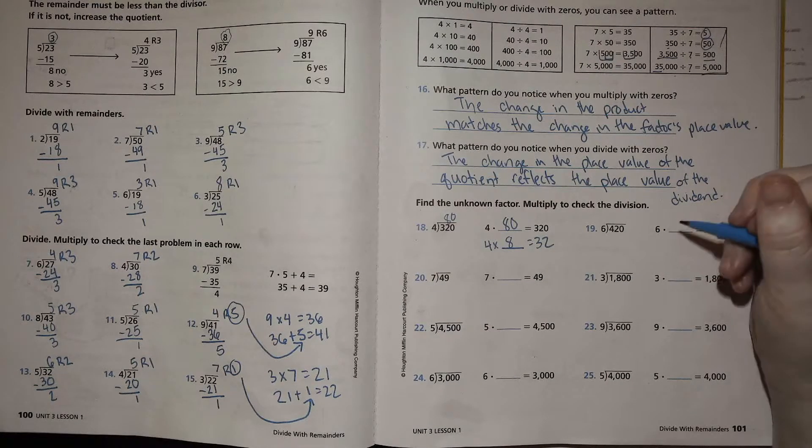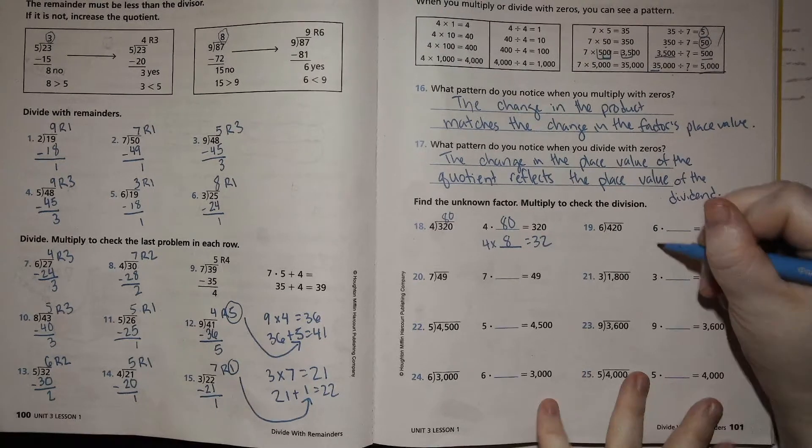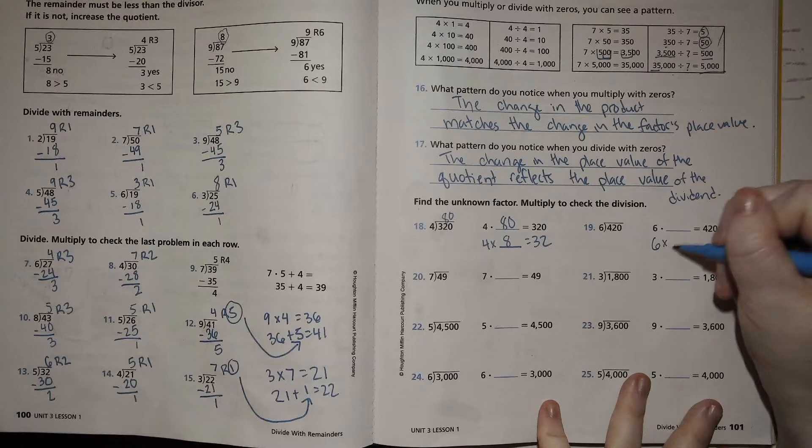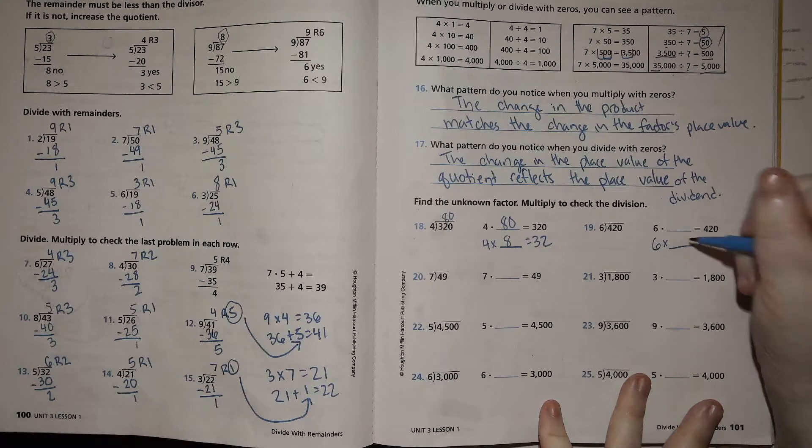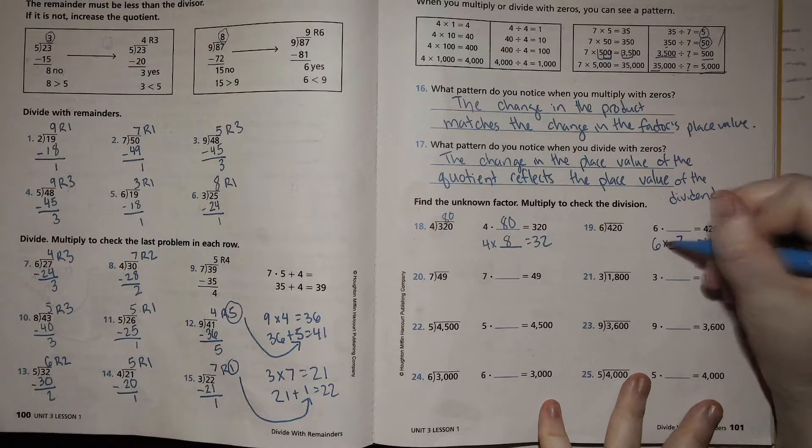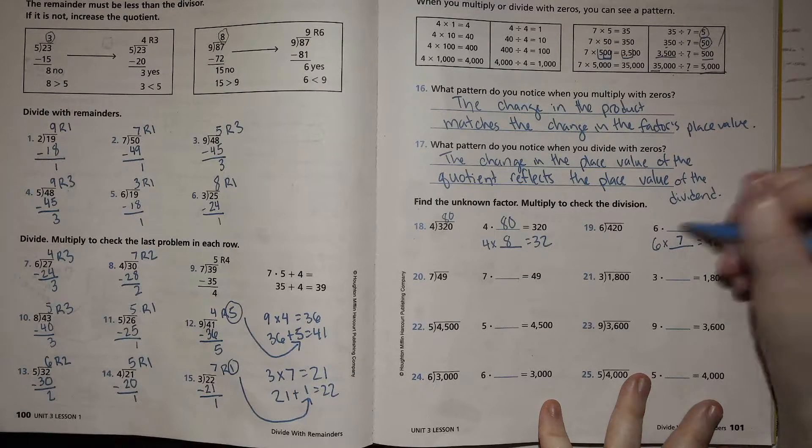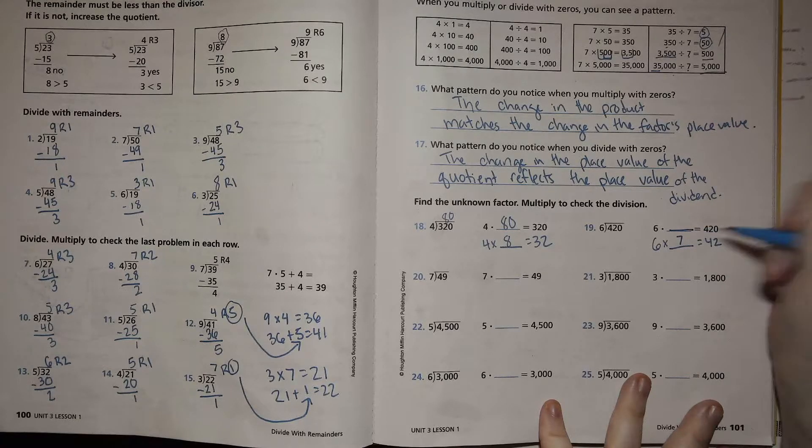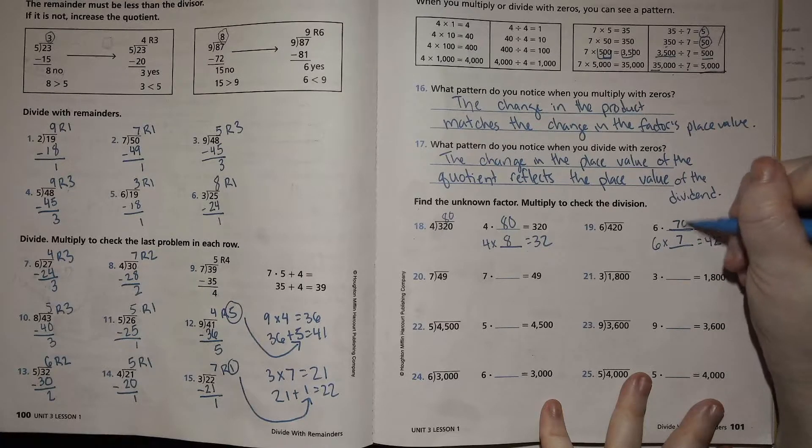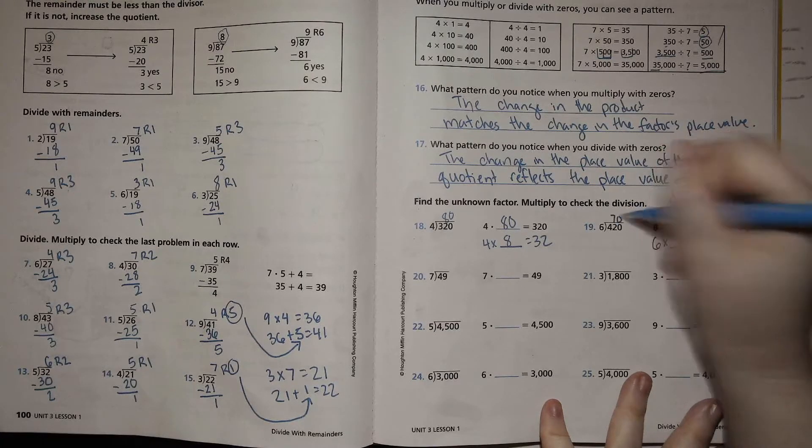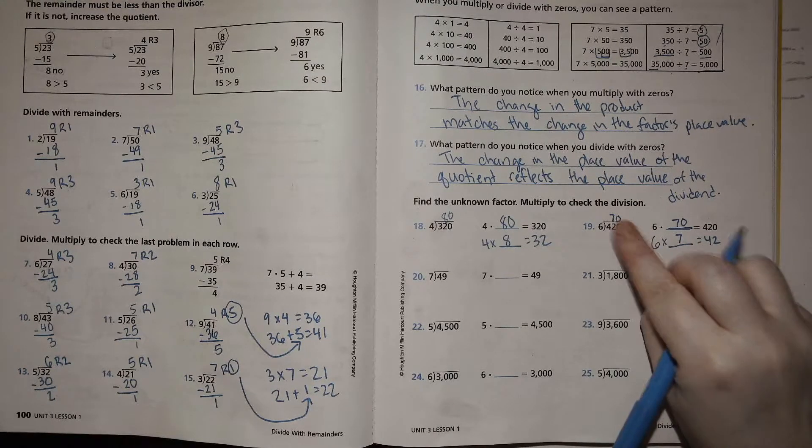Next one. 420 or 42 tens divided by 6. So let's think 6 times what equals just 42? 6 times what is 42? 7. So if 6 times 7 is 42, what is the place value needed to get 42 tens? 7 tens or 70, right? You'll notice I'm lining the place value up here, carefully lining up my ones with my ones and my tens with my tens.